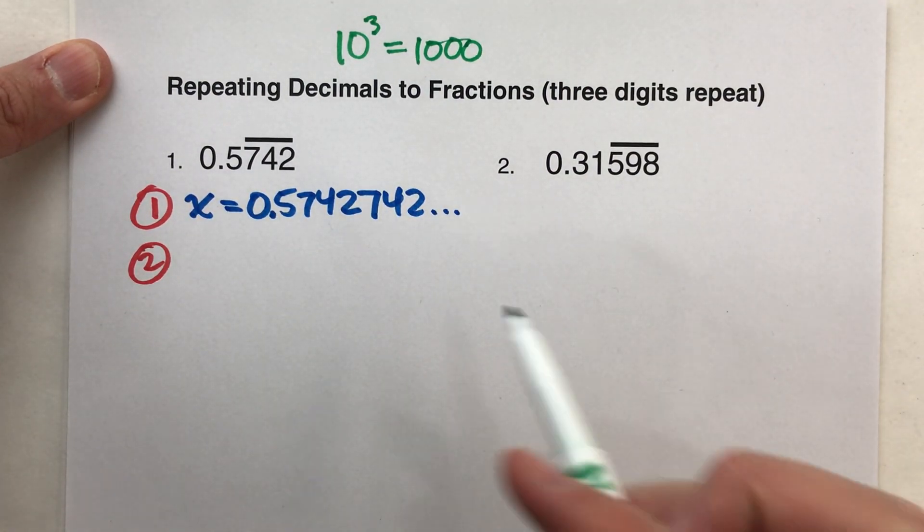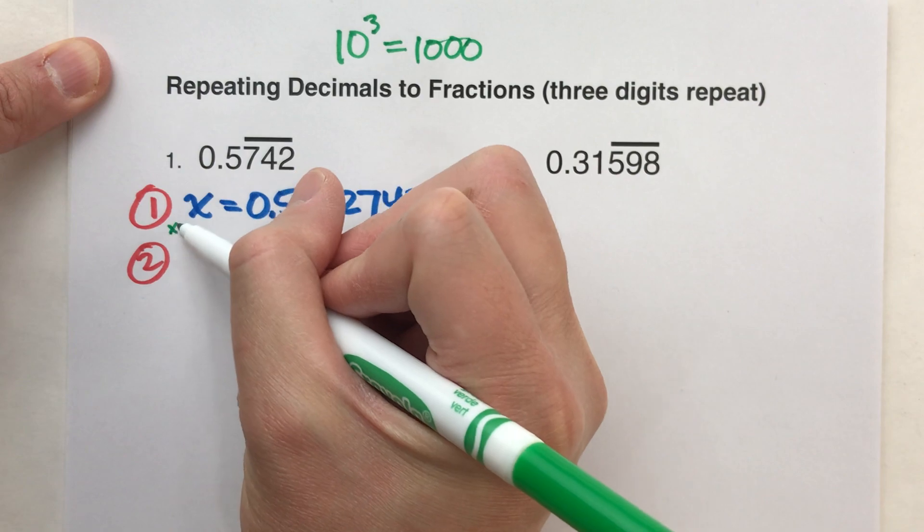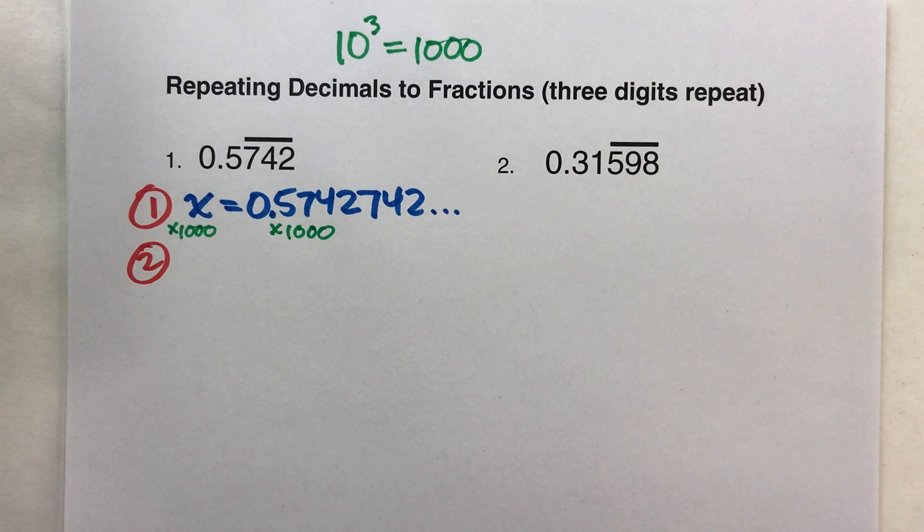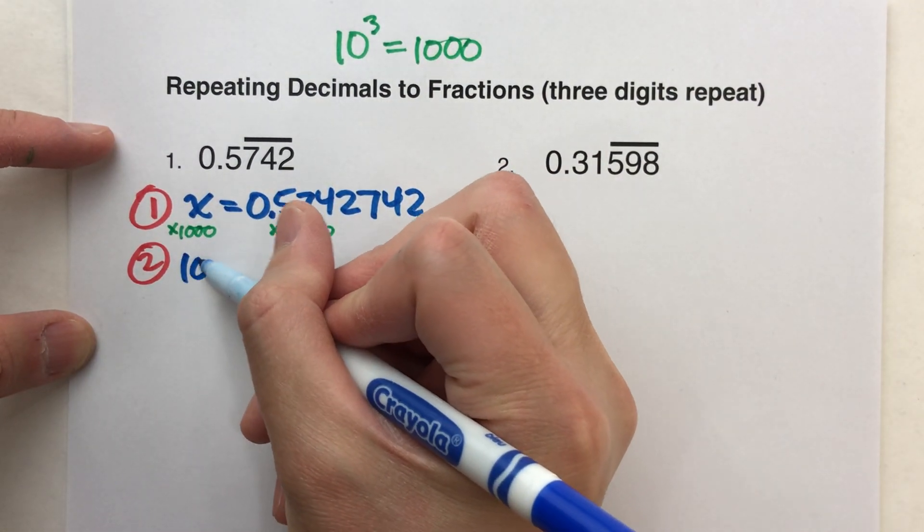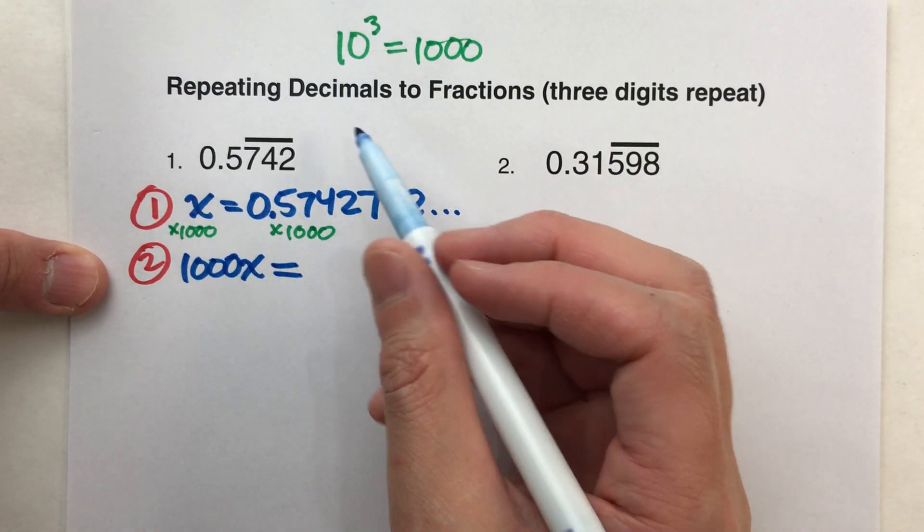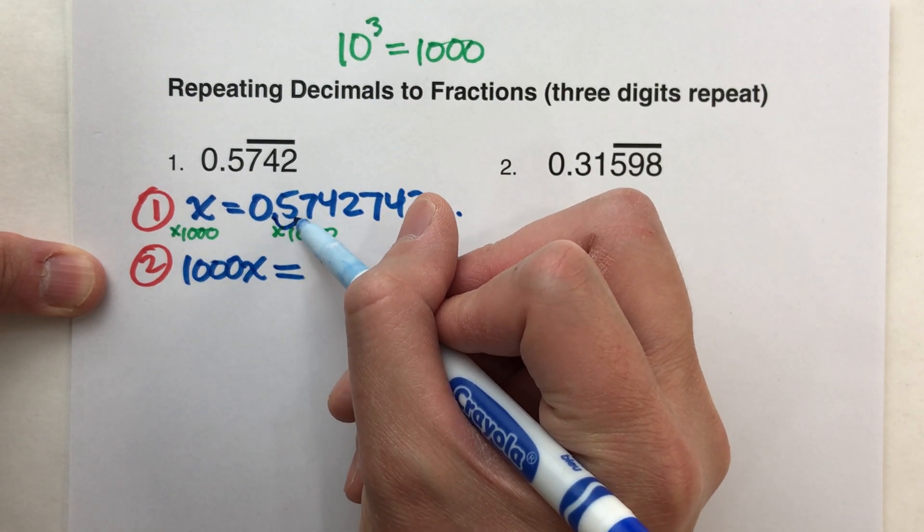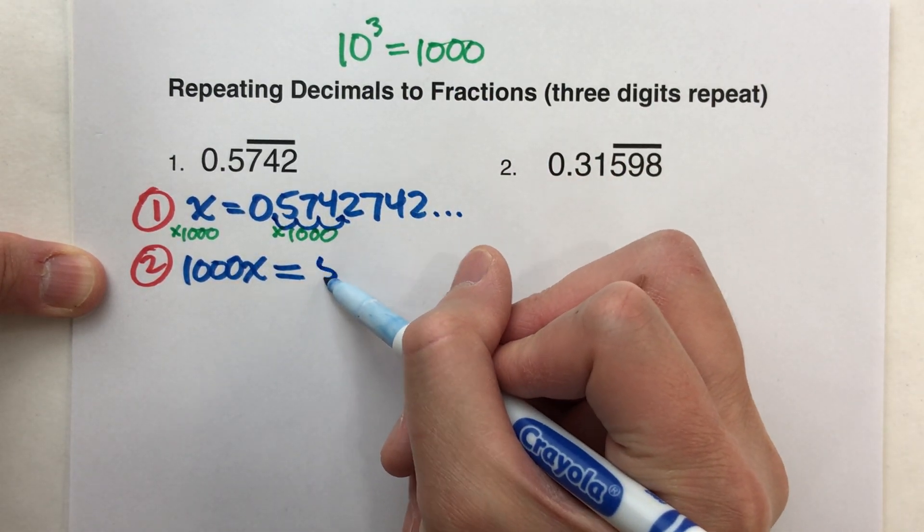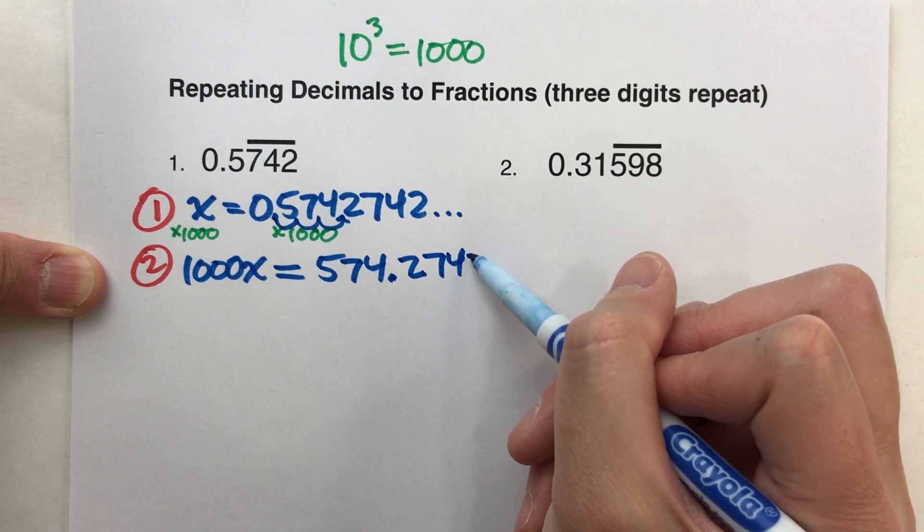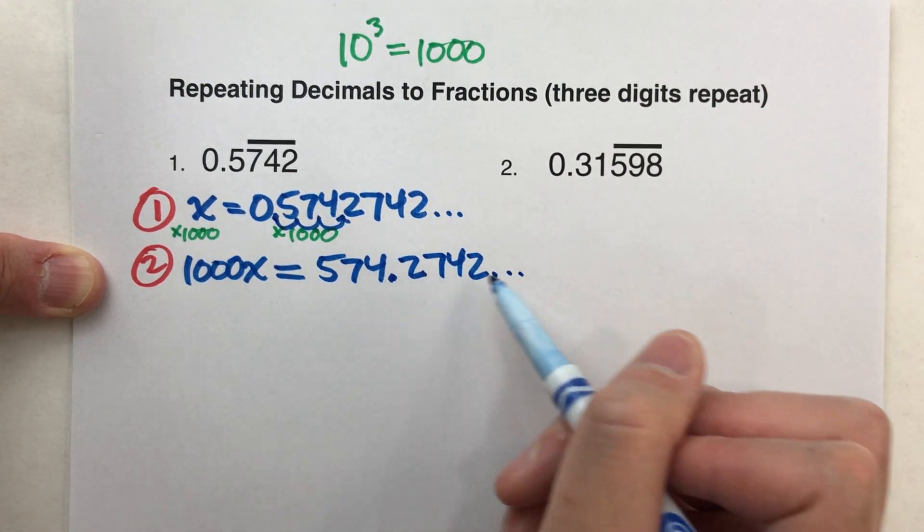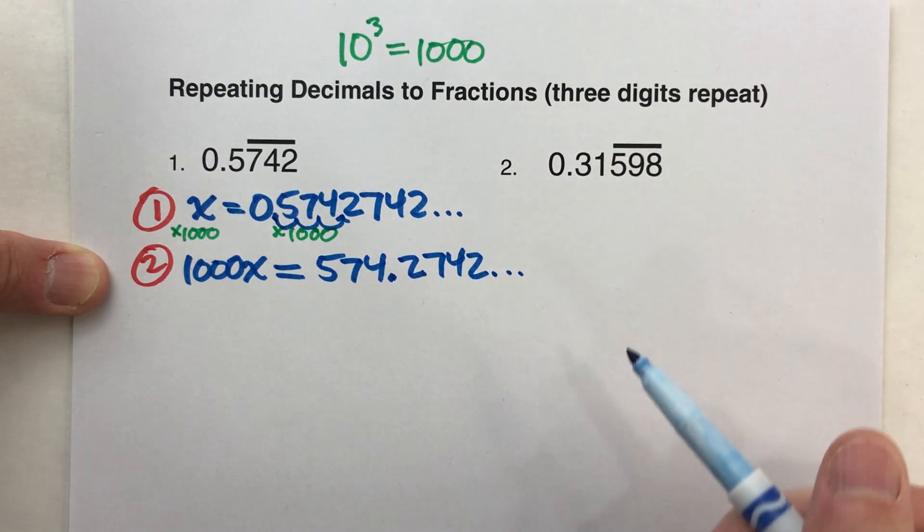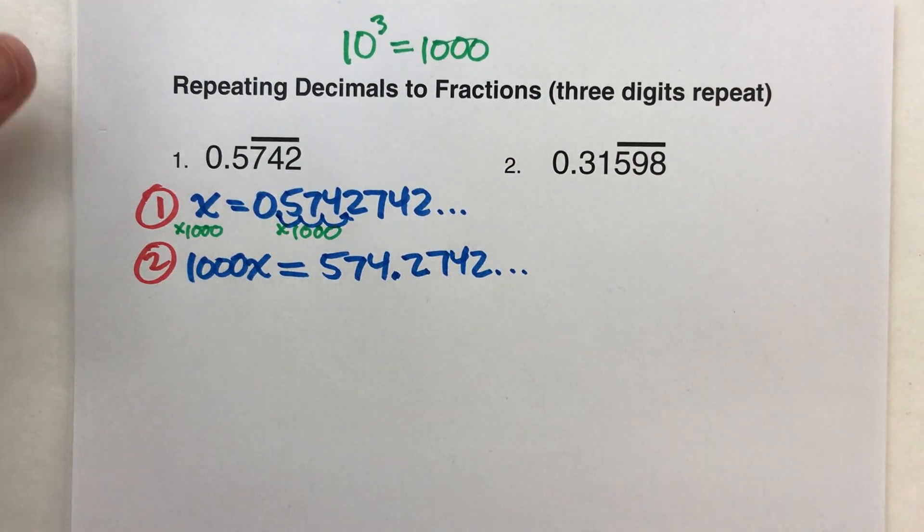So what that tells me is, I need to multiply both sides of this equation by a thousand. Alright. So, when I do that, a thousand times x gets me a thousand x. On the other side, when I multiply this side by a thousand, the easiest way to do it is just to move that decimal over three places. So this just becomes 574.2742, 742. Remember, the 742 is going to repeat, so when I have the 742 here, I know a 742 is going to follow that, and another 742, 742, and so I'm just going to do the dot, dot, dot, save myself some time.